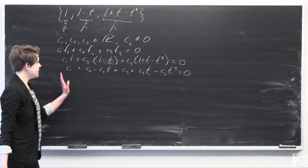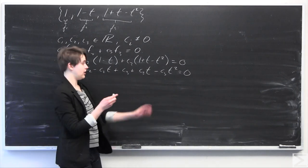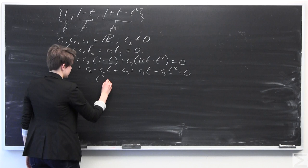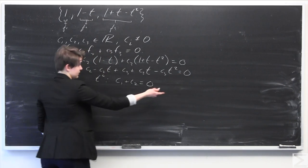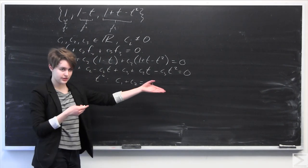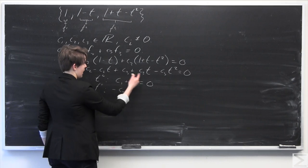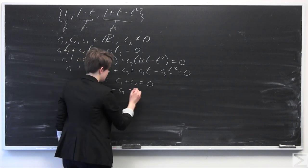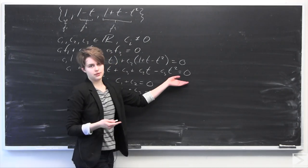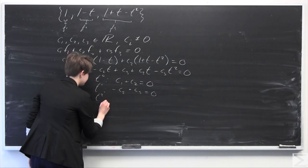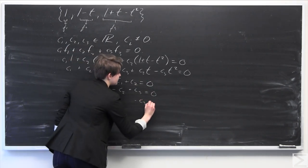Now I'm going to group together similar powers of t. For the t to the 0 terms, we have c1 plus c2 plus c3, which equals 0 since there are no constant terms on the right-hand side. For the t to the 1 terms, we have negative c2 plus c3, which also equals 0. And for the t squared terms, we only have negative c3, so negative c3 equals 0.